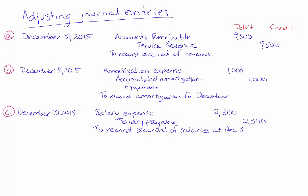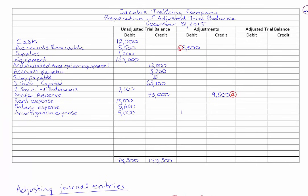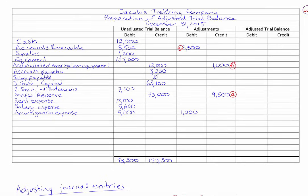Go back to your journal entry and check it off that we've dealt with it. Now let's do journal entry B: debit amortization expense and credit accumulated amortization equipment for $1,000. Again, I'm putting the letter beside the numbers so that we can see which journal entry this is for.